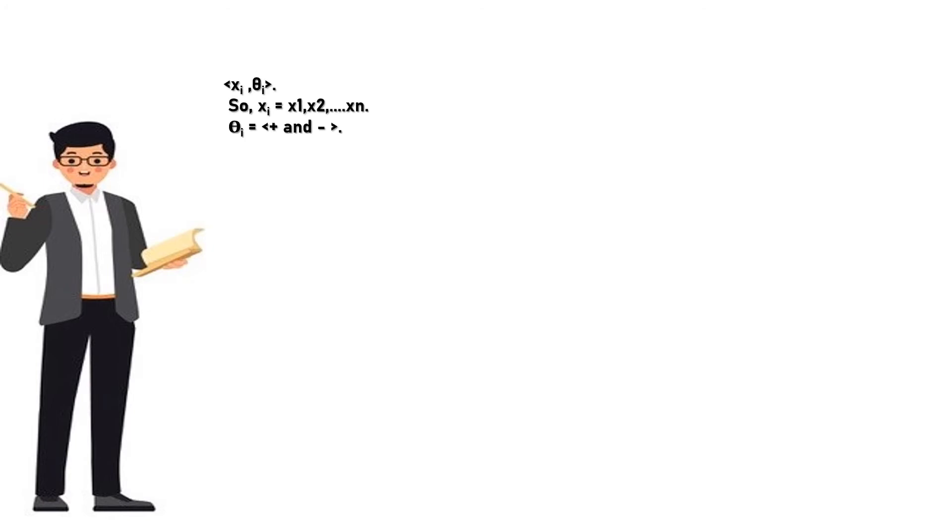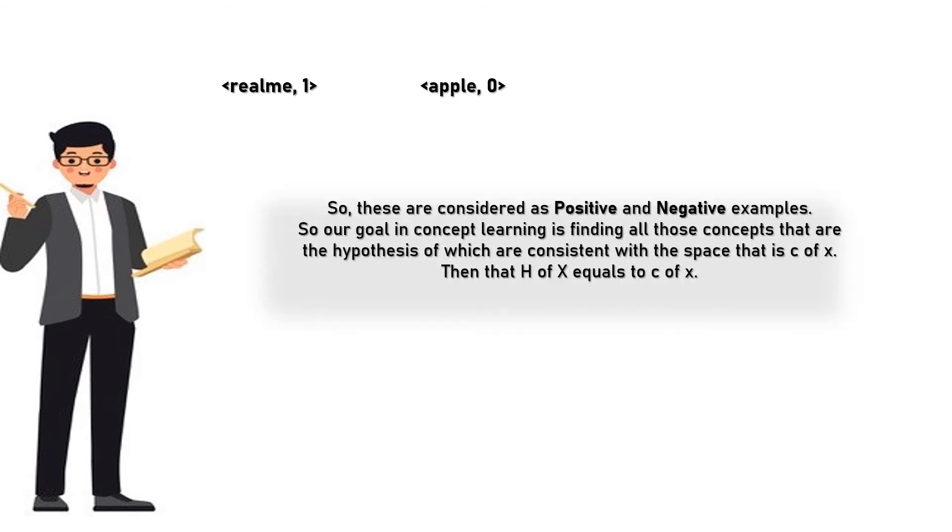So Xi equals X1, X2, so on Xn. Theta i equals plus and minus. Let's consider a training sample Xi, C of Xi. Here consider an example: Realme and Apple. Realme does have space, so it is Realme, 1. But Apple don't have space, so Apple, 0. So these are considered as positive and negative examples. So our goal in concept learning is finding all those concepts that are the hypothesis of which are consistent with the space that is C of X. Then that H of X equals to C of X.